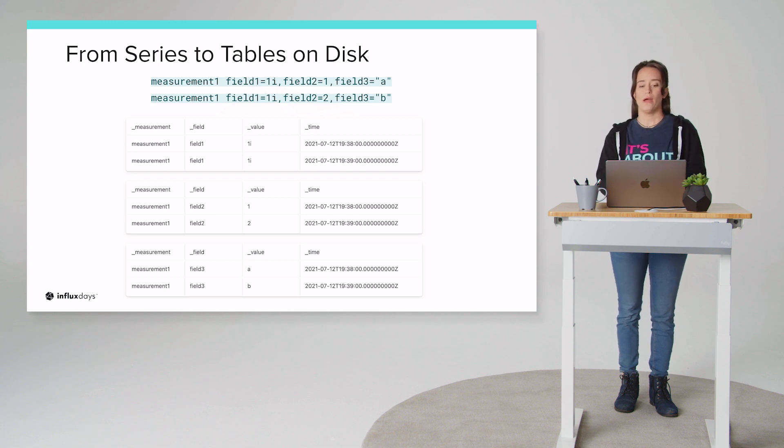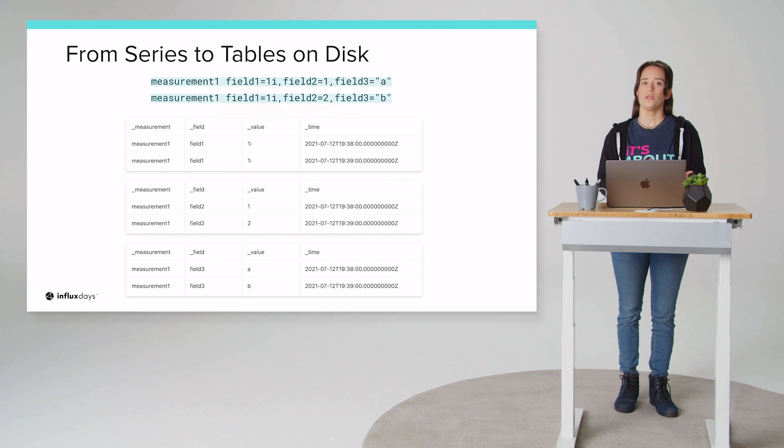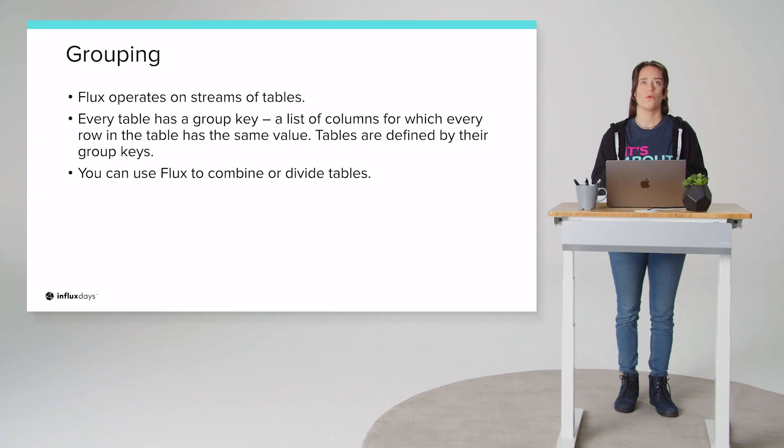So if we are writing these two lines of line protocol, we have a measurement one, and then we have three fields, field one, field two, field three. And remember, a series is a unique combination of measurement, tag sets, and field keys. So since we have no tags, we only have one measurement here, and we have three fields, we have a total of three series. So by default, these three series get converted to three tables on disk.